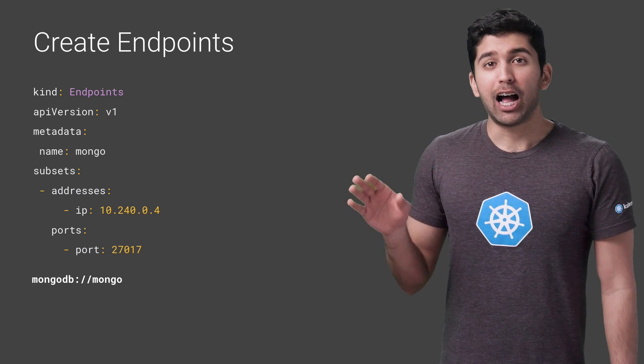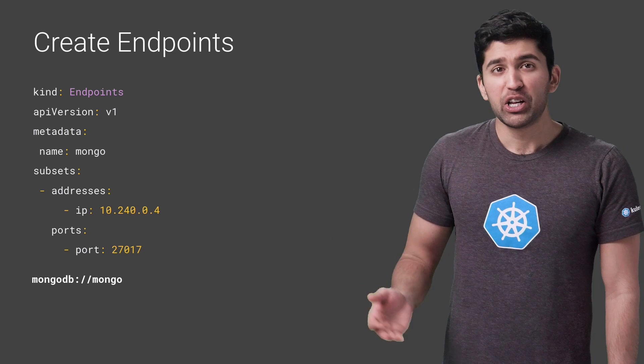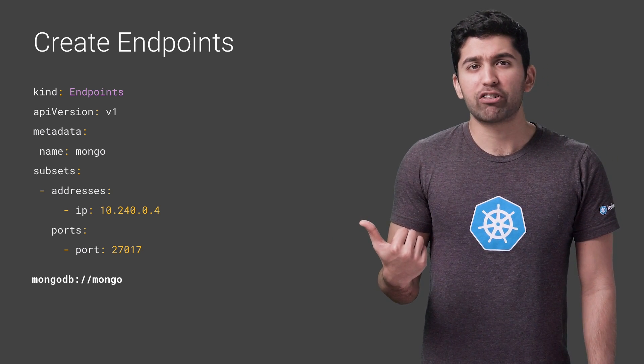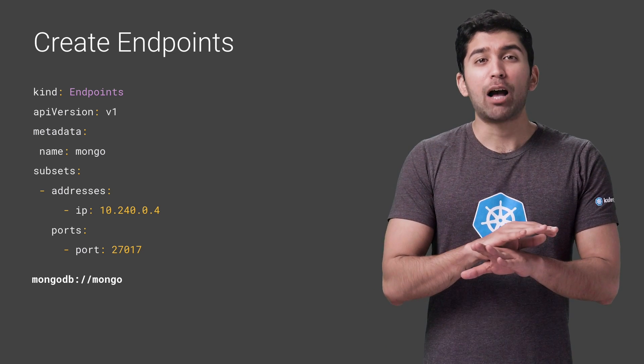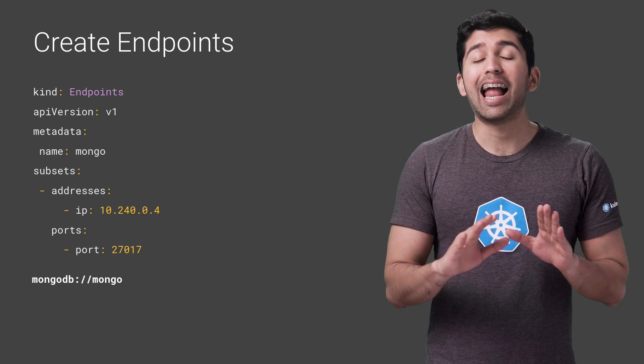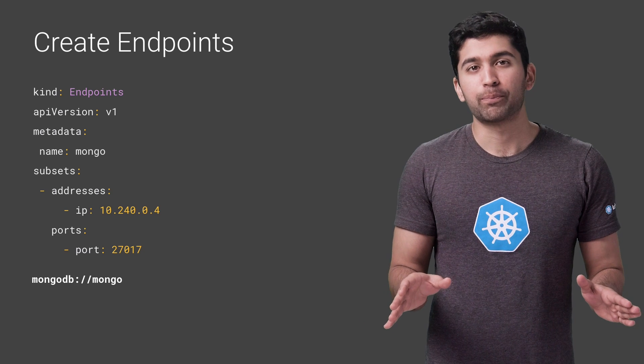So now you can access the database with a simple connection string — no need to use IP addresses in your code at all. If the IP addresses change in the future, you can just update the endpoints with the new IP addresses, and your applications won't need to make any changes.